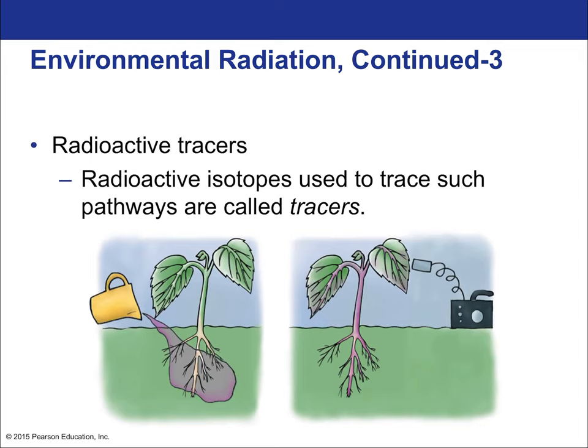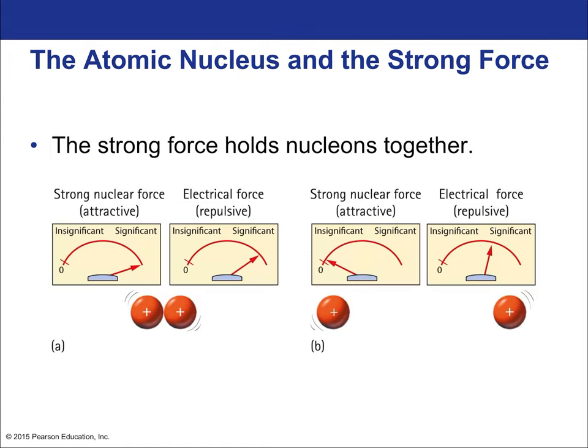There are many applications of radiation. One is using radioactive isotopes as tracers to trace pathways through systems — like the root system of a tree, blood vessels, or finding blood clots in humans. You inject a small amount of something radioactive, then use a detector to track where the radiation goes and how long it takes to get there.